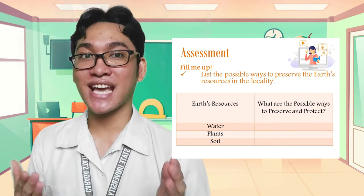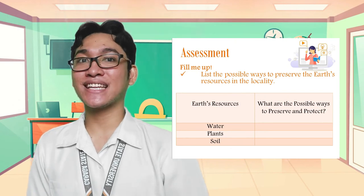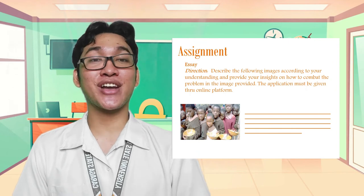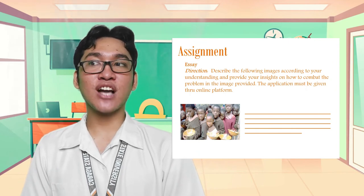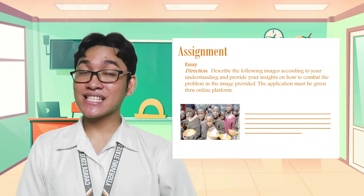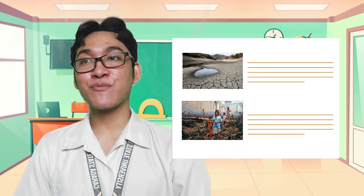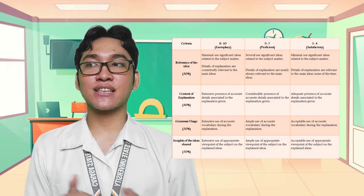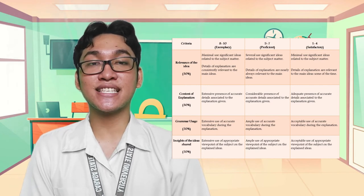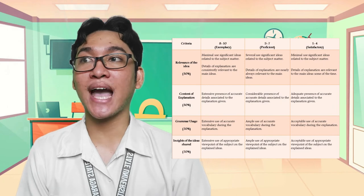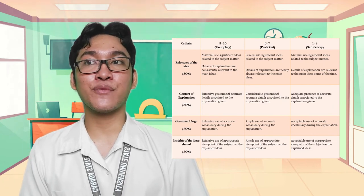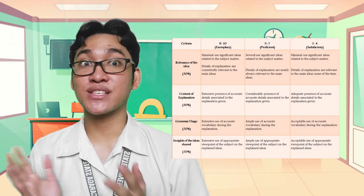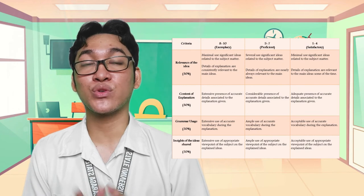For your assignment, let's do an essay. For the direction, describe the following images according to your understanding and provide your insights on how to combat the problem in the image provided. Now, let's not forget the rubric. For the scoring rubrics, we have: relevance with ideas 30%, content explanation 30%, grammar usage 20%, and insights and ideas shared 20%. For the score, we have 8 to 10 exemplary, 5 to 7 proficient, 1 to 4 satisfactory. Refer your answers to these criteria and scoring rubrics.